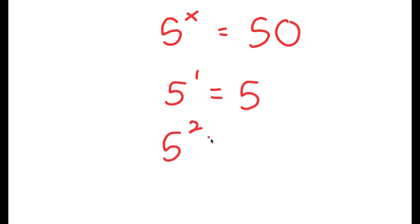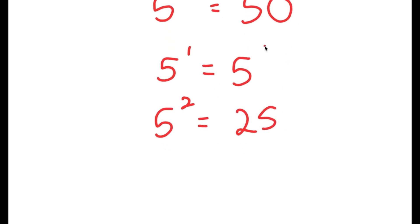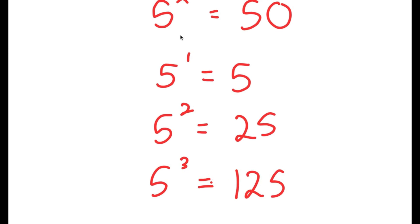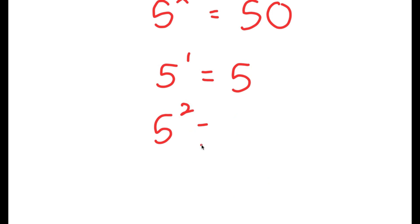If x equals 2, I get 5 to the power of 2, which is 25, and this again is too low. If x equals 3, then I have 5 to the power of 3, which is 125, and this is way too high. So we know that the value of x is going to be somewhere in between 2 and 3, meaning it's going to be a decimal. So how are we going to find the exact value of x?